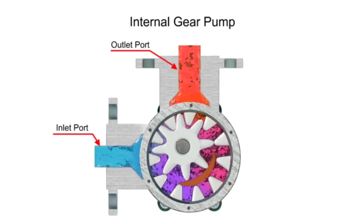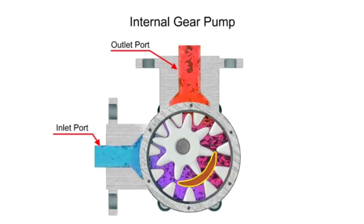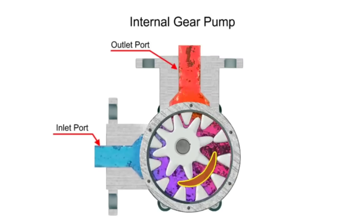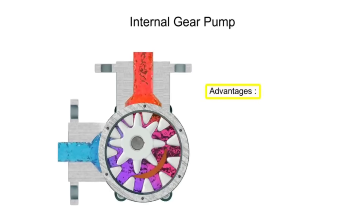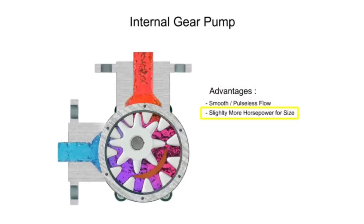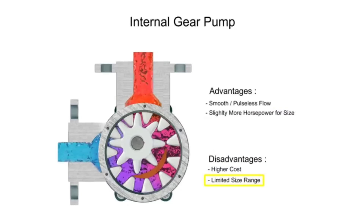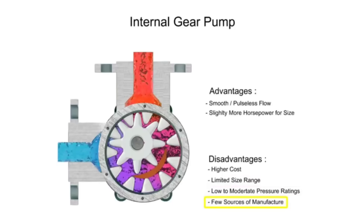A stationary crescent-shaped divider separates the intake and discharge portions of the fluid. Advantages of internal gear pumps are a smooth and almost pulseless flow and slightly more horsepower for its size. Disadvantages are higher cost, limited size range, low to moderate pressure ratings, and few sources of manufacture.